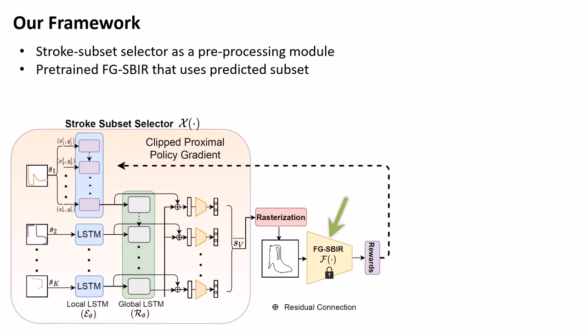In the stroke subset selector, each stroke is first fed through a local stroke embedding network with weights shared across strokes, and then via a global relational network to enrich each stroke-level feature about the global semantics.